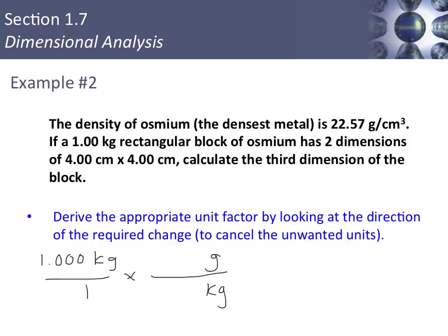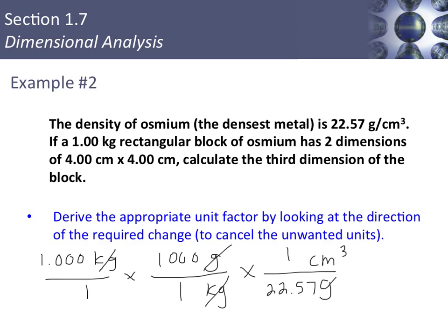We start with 1 kilogram, cancel the kilograms, and go to grams — there are 1,000 grams in a kilogram. Now we use our density to cancel grams: grams in the numerator, grams in the denominator, and cubic centimeters in the numerator. One cubic centimeter of osmium has a mass of 22.57 grams. Grams cancel and we're left with cubic centimeters — our volume — giving us 44.3 cubic centimeters.